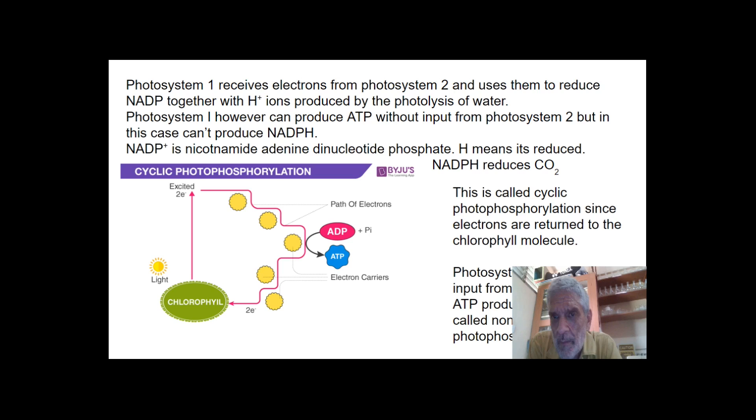Now photosystem one can't produce ATP without input from photosystem two. But in this case it can produce NADPH. NADP plus is nicotinamide adenine dinucleotide phosphate. And H simply means it's reduced.